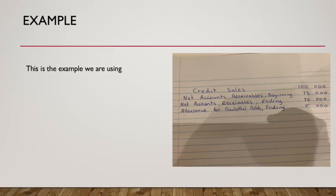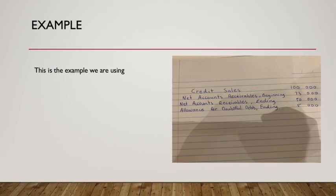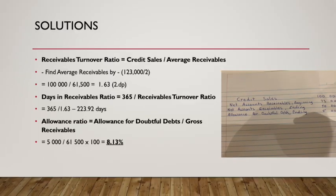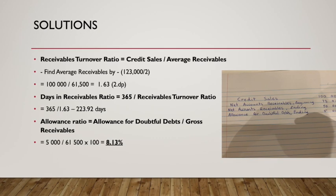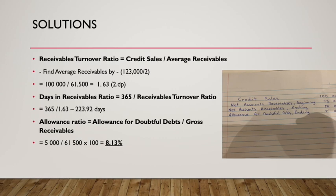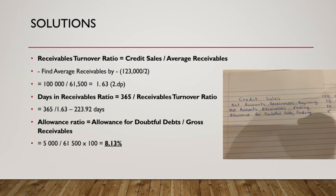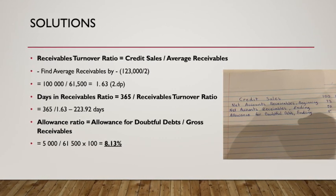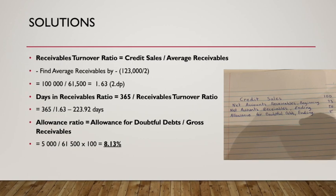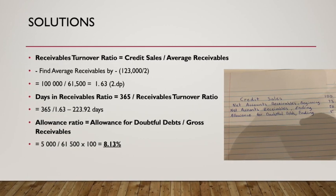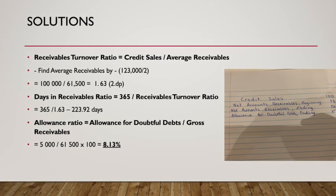For today's lesson, this is the example we shall be using. We start off with the receivables turnover ratio by finding the average receivables, by adding together the beginning and ending net account receivables and dividing them by two. We then divide our credit sales by our average receivables and end up with 1.63, rounded to two decimal places.